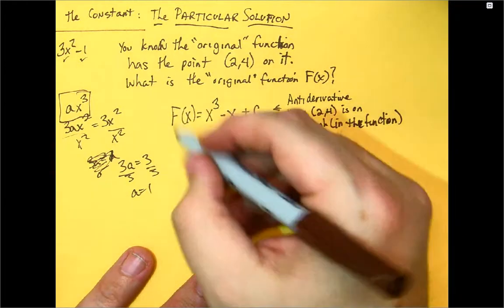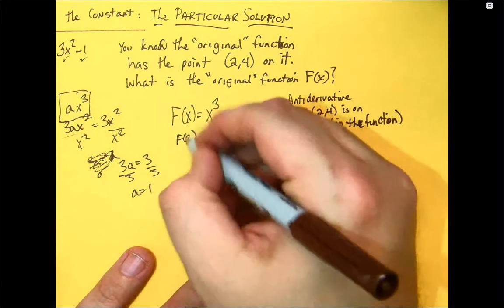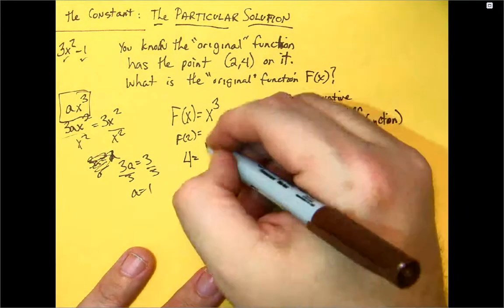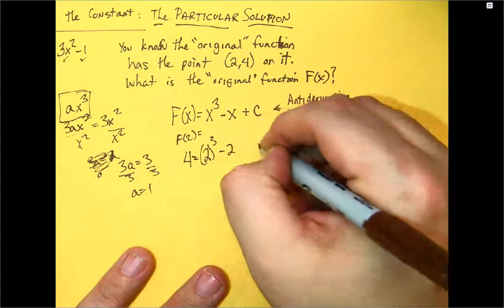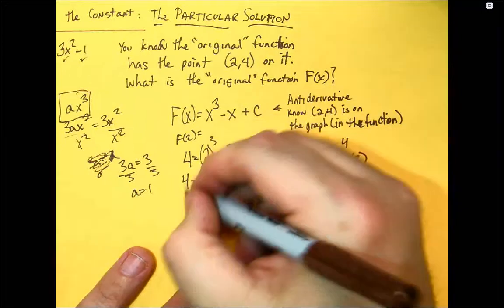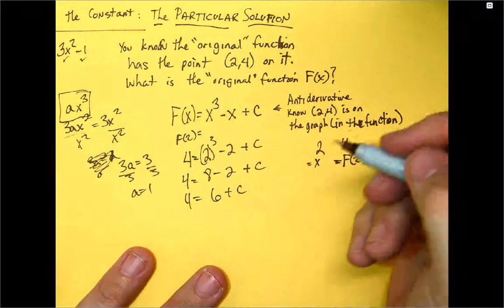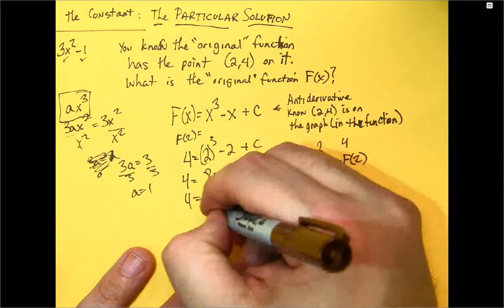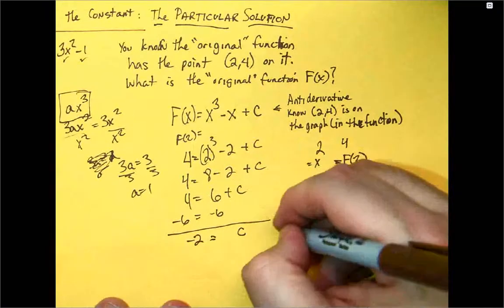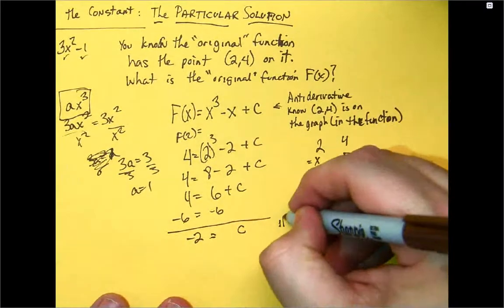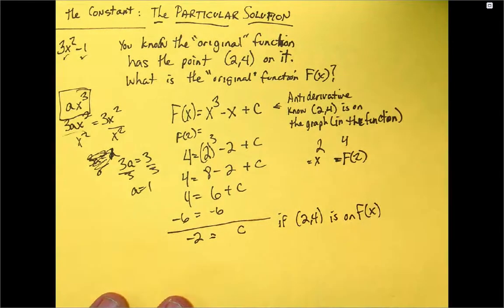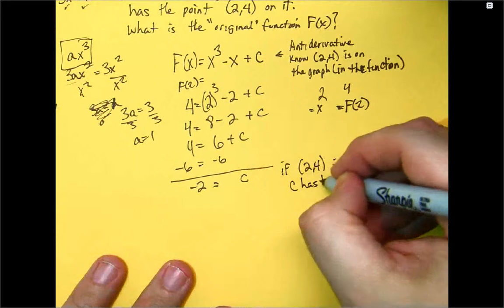So if I'm looking at f of 2, this is going to be 4 is equal to 2 cubed minus 2 plus c. So 4 is equal to 8 minus 2 plus c. So 4 is equal to 6 plus c. Subtract the 6 from both sides. c is equal to negative 2. So now I know that if the point 2, 4 is on big F of x, c has to be negative 2.